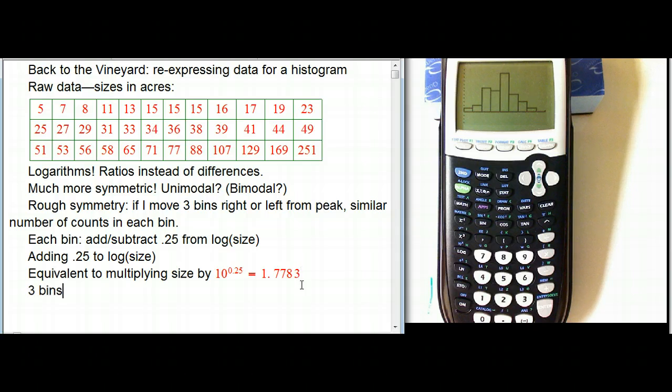And three bins is going to be, that means I add 0.75 to log of size, or in other words, I multiply size by 10 to the 0.75. And I'll have it calculate that, that's about 5-ish, that's about 5.6.